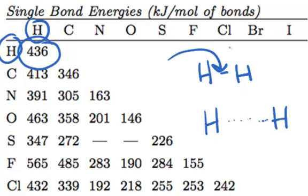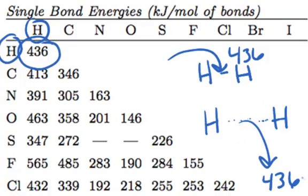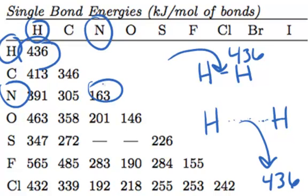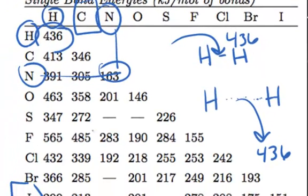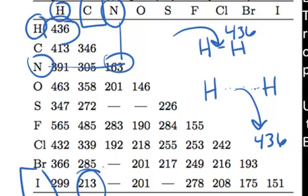So it takes 436 kilojoules per mole to break the bond, and upon bond formation, 436 kilojoules per mole of energy would be released. That's how we interpret bond energy data — you can just read off the table. A nitrogen-nitrogen single bond has a bond energy of 163 kilojoules per mole, and a carbon-iodide single bond has a bond energy of 213 kilojoules per mole.